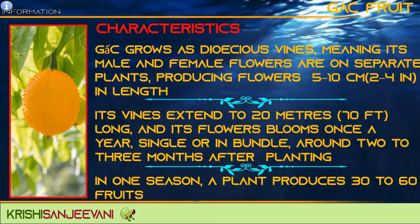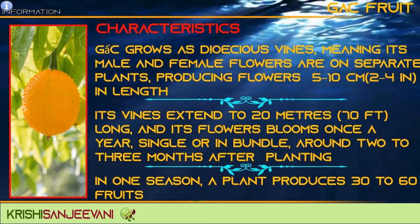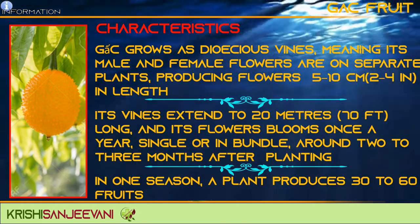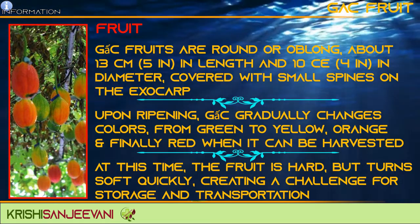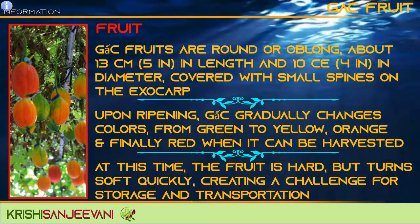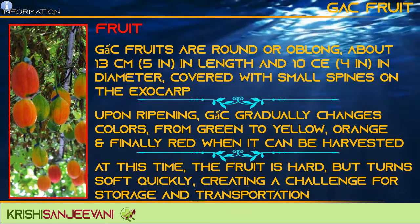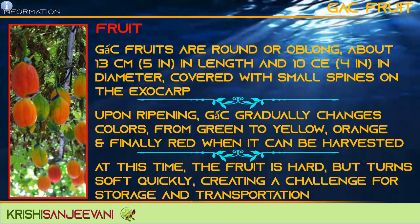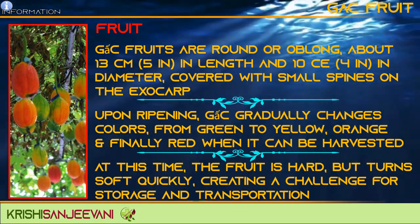In one season, a plant produces 30–60 fruits. Gac fruits are round or oblong, about 13 cm in length and 10 cm in diameter, covered with small spines on the exocarp.